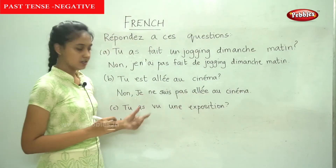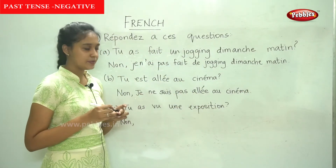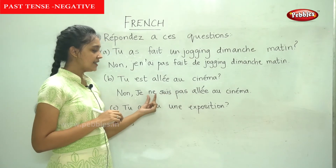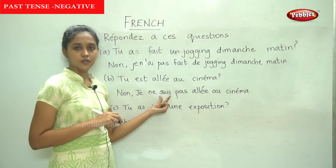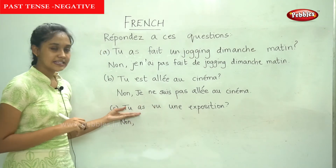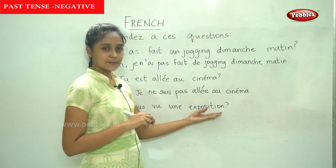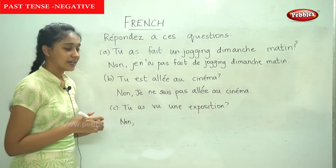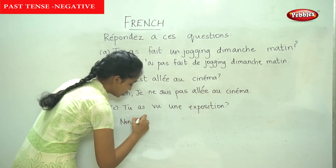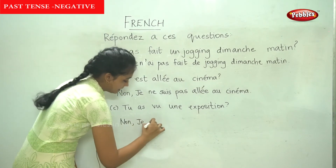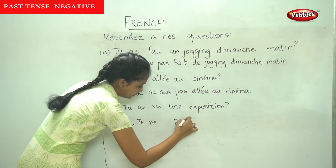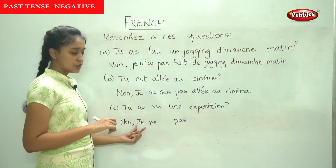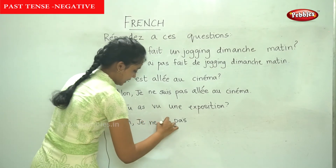Je ne suis pas allé. So we add it — it's very simple. If you know passé composé, you just have to write the passé composé and add ne before and pas after the auxiliary alone. The final sentence: tu as vu une exposition. Again, tu becomes je. We add ne before and pas after. The auxiliary here is avoir, and for je it is ai — there is a vowel clash.